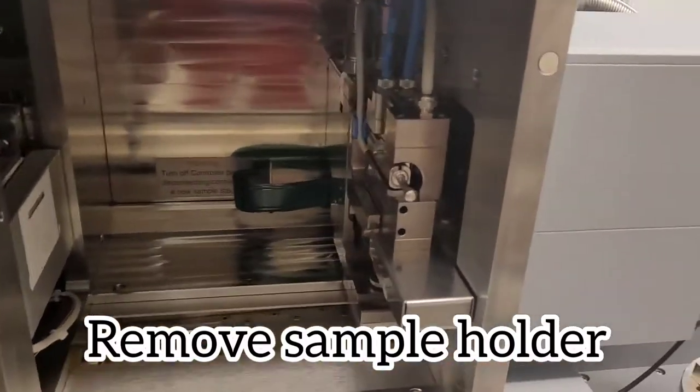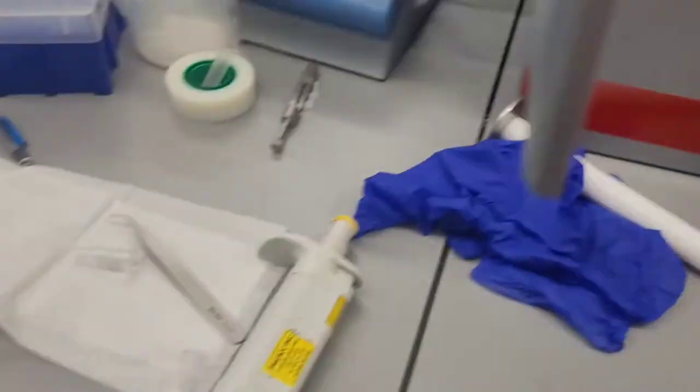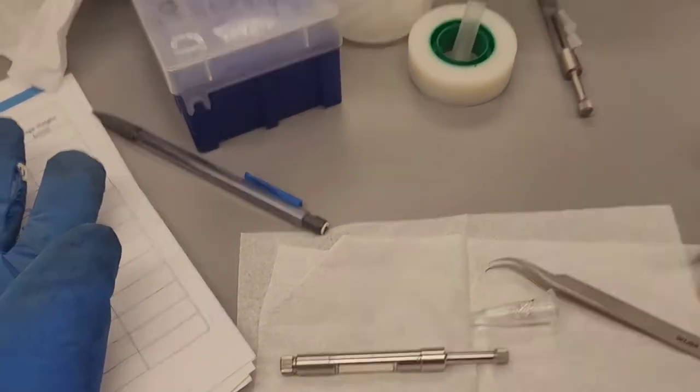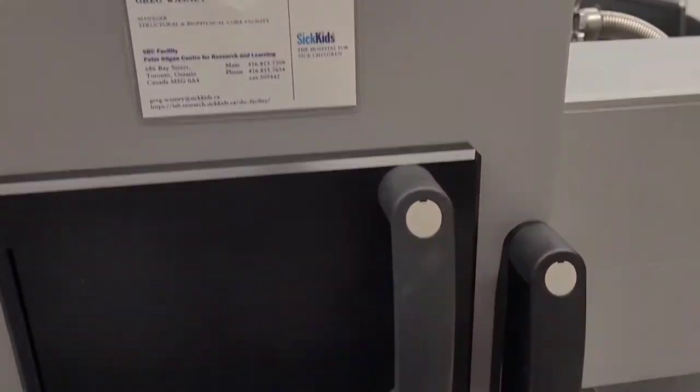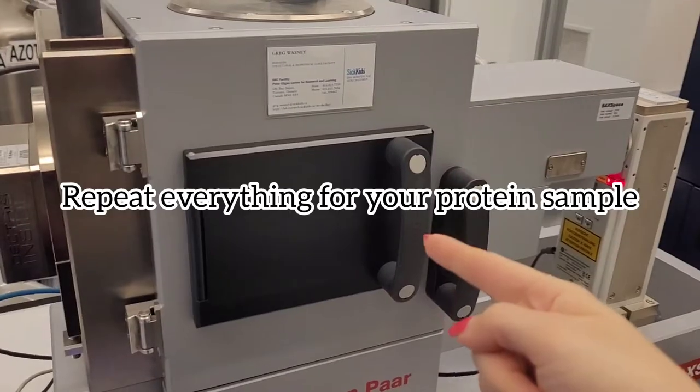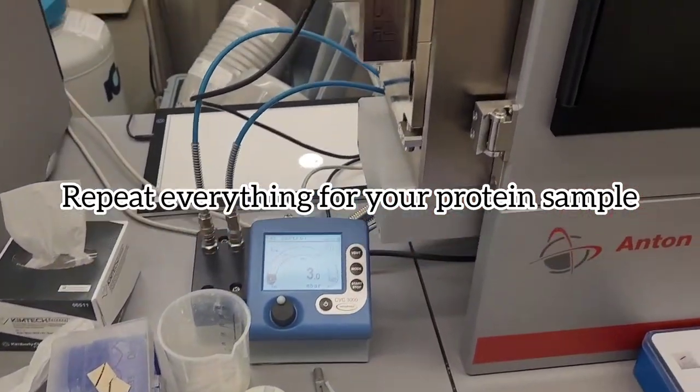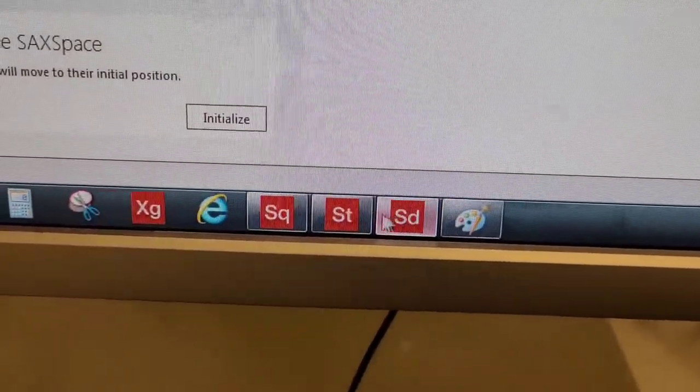Then I undo the vacuum and take out my sample. Doing everything in reverse. Always make sure you don't actually touch the capillary itself which is in the center. And then I do the same thing for my sample and I run that.